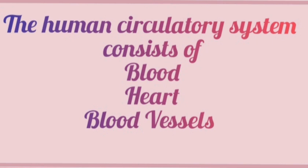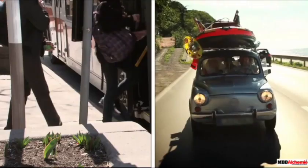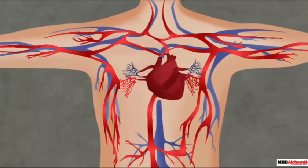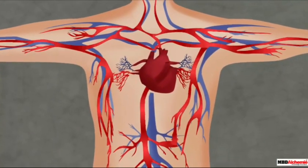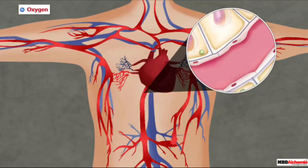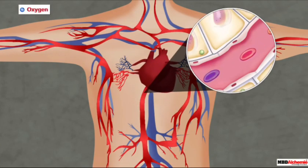Today we will be discussing our next topic, that is blood vessels. Blood transports all the substances throughout the body through a network of tubes which are called blood vessels. The circulatory system transports all different substances — digested food, oxygen, water and nutrients — throughout our body.